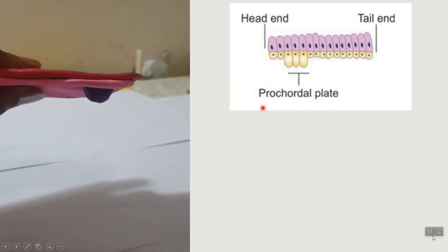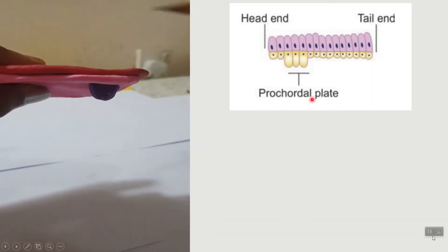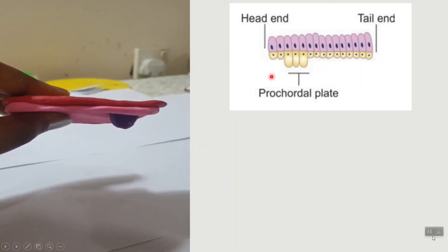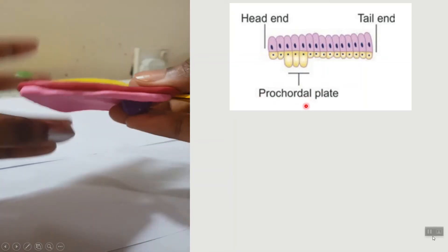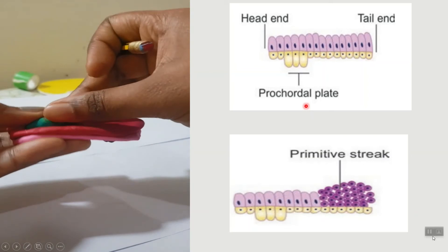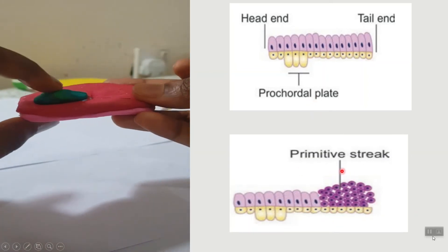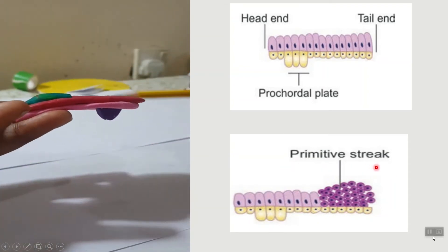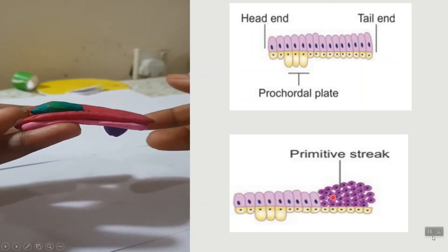We can now distinguish the ends of the embryonic disc. After some time, cells of the ectoderm will proliferate and form the primitive streak. This allows us to determine polarity — this is the head end and this forms the tail end of the embryonic disc.